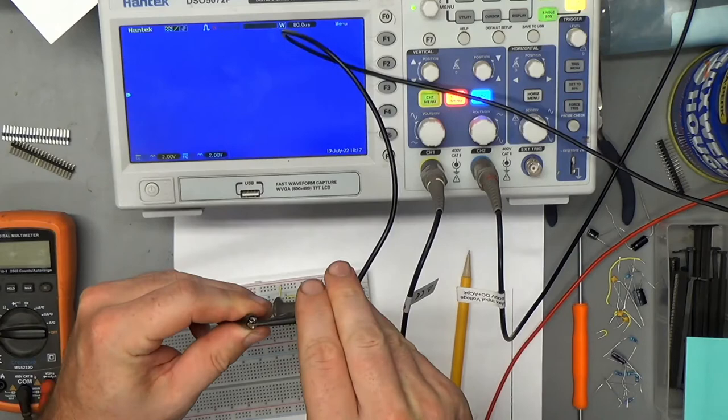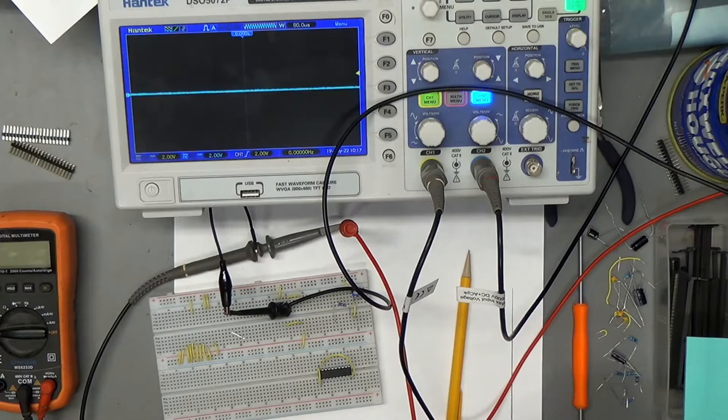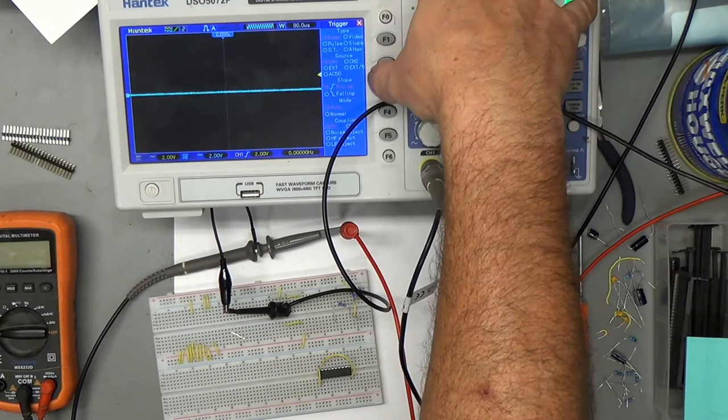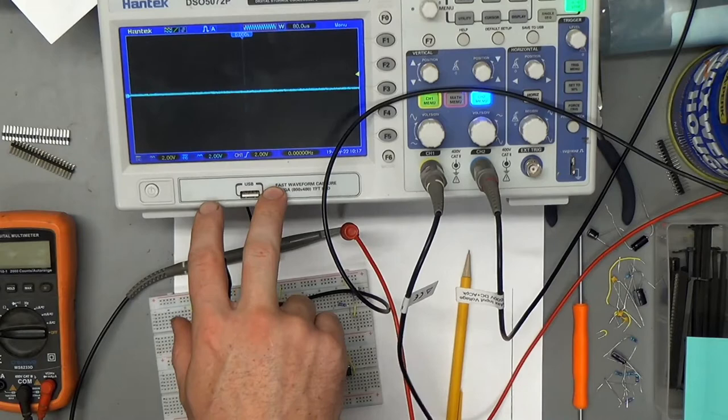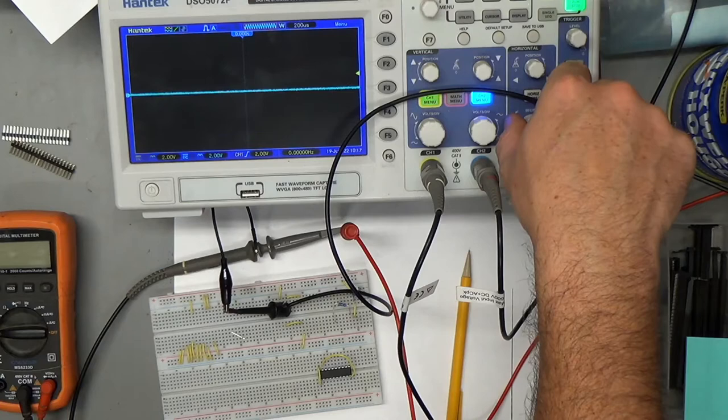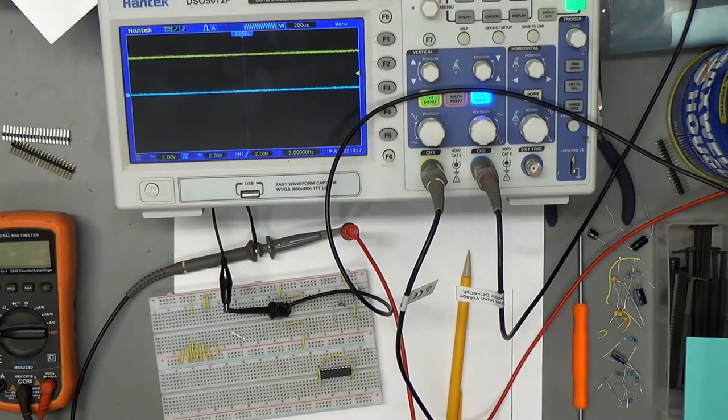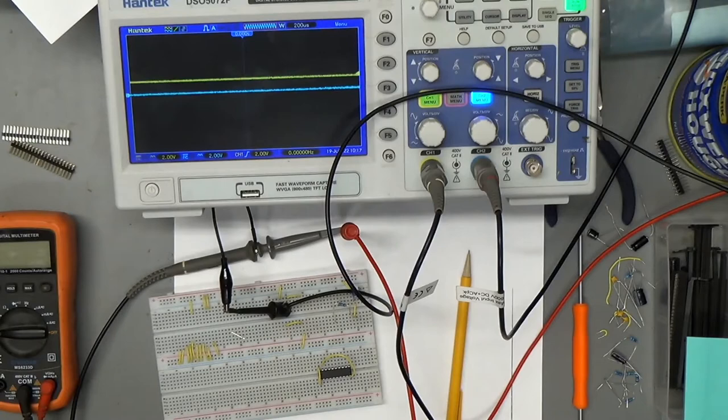Let's just hook it straight up to the scope probe. What could go wrong? Not a thing. Let's see, trigger menu, trigger on channel one, yes, trigger on the rising edge, yes, very good. Two volts per division. Let's turn our time base up a little bit. What's going to happen when we turn the power on? Five volts. Oh it went up really fast.